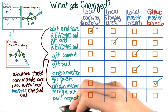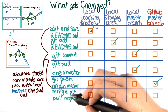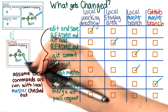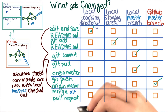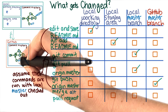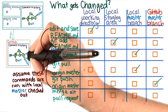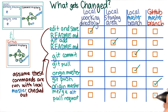Down to the last one. If we have a pull request to merge the alt branch into master and that pull request gets accepted and merged in, then the alt branch will get merged with master. So the GitHub master branch is the only thing that will get updated.